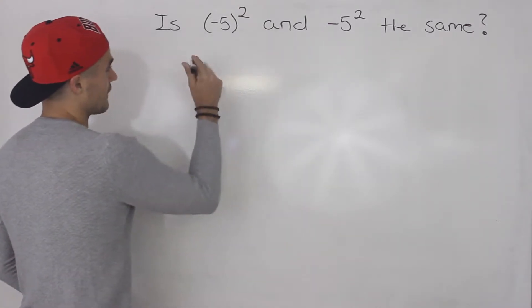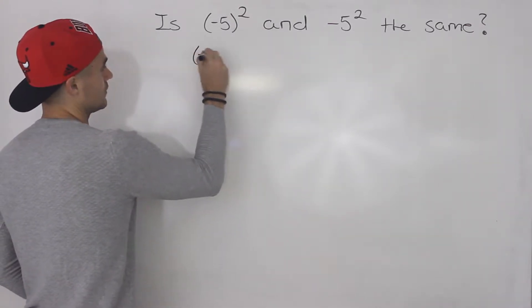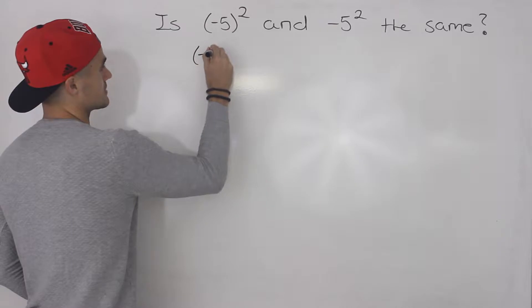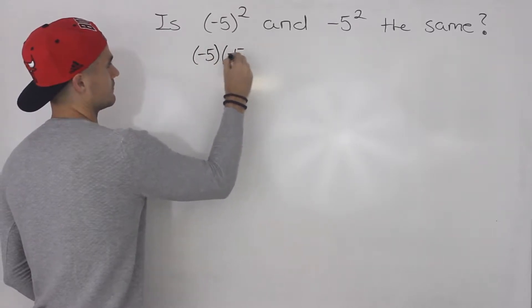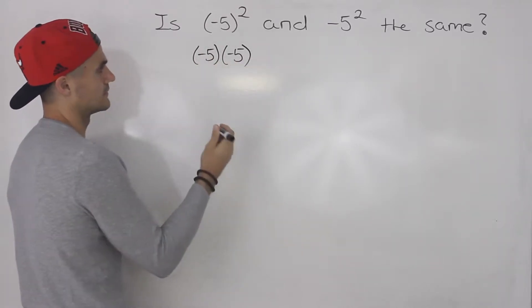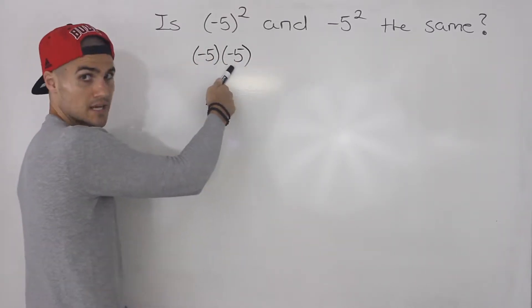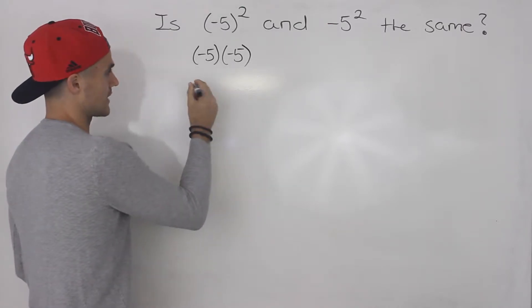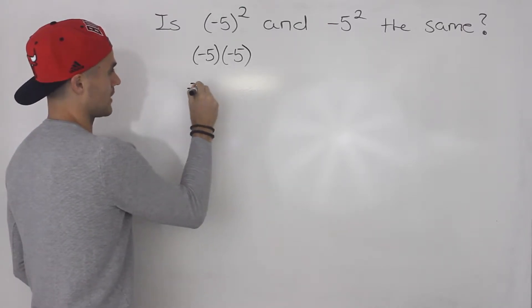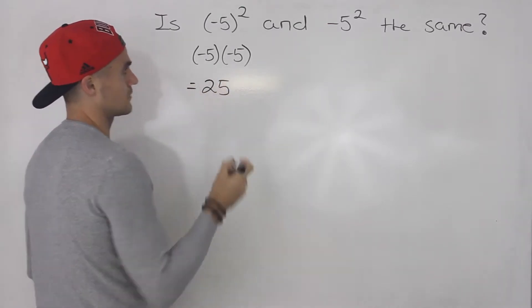So negative five to the two — you can rewrite this as negative five in brackets times negative five in brackets. And what does that give you when you multiply it? It gives you 25.